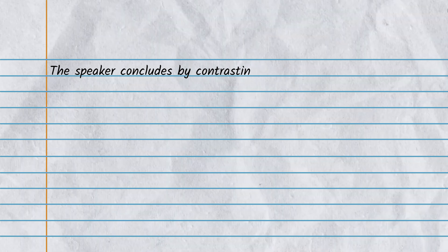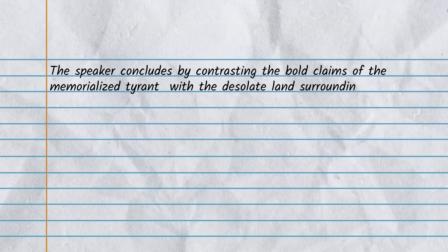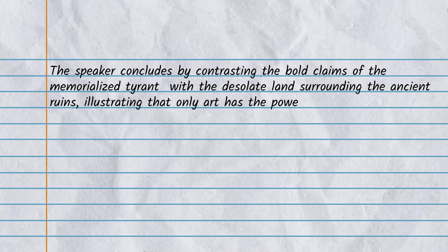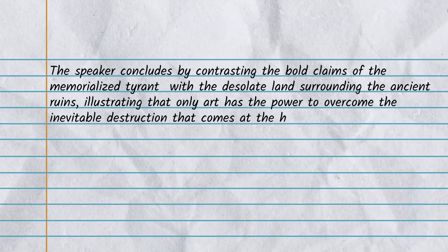Here's what our final sentence would look like: 'The speaker concludes by contrasting the bold claims of the memorialized tyrant with the desolate land surrounding the ancient ruins, illustrating that only art has the power to overcome the inevitable destruction that comes at the hands of time.' The end of that topic sentence is completely thematic. The beginning references the monument from the start of the poem, highlights the bold claims explored in the middle, and references the final setting projected at the end of the poem. Thus, in this last sentence, the whole poem is covered — both literally and idea-wise. And there you have them: all of the topic sentences for all of your poetry paragraphs. Now that we have our topic sentences, thesis construction will be incredibly simple. You can learn how to write your poetry thesis statements by checking out what's about to pop up on your screen.